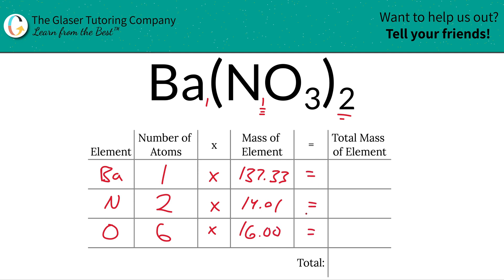So then all we have to simply do is multiply this row. The mass of barium multiplied by one barium should give us the total mass of barium of 137.33.